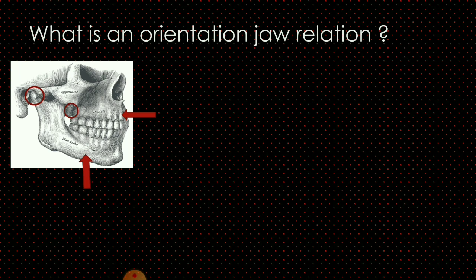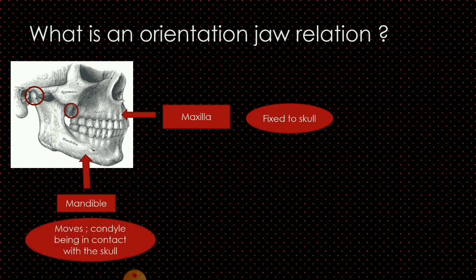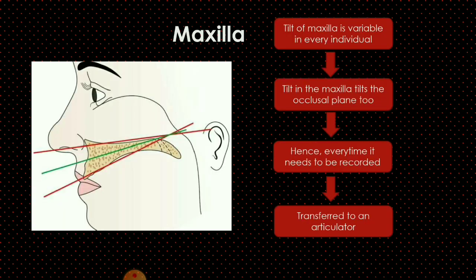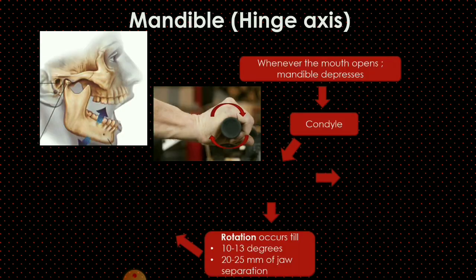We all know that we have the maxilla, which is fixed to the skull, whereas the mandible's condylar process moves while being in contact with the skull. Focusing upon the maxilla, the inferior border of the maxilla is at some angulation with the superior border. This tilt or angulation is variable in every individual, and as this tilt in the maxilla is variable, the tilt in the maxillary occlusal plane becomes variable too. So every time a new patient comes, we need to record it differently and transfer it to an articulator.